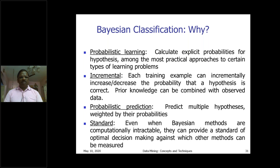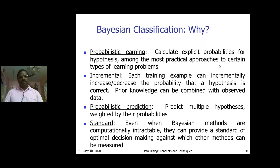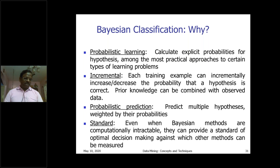There are four kinds of Bayesian classification: probabilistic learning, incremental learning, probabilistic prediction, and standard prediction. In probabilistic learning we calculate explicit probabilities for hypotheses. Based on a condition, the Bayesian classifier is carried out as one of the most practical approaches to certain types of learning problems. Attribute values are calculated by means of a hypothesis and the results are nearly accurate, not perfectly accurate.